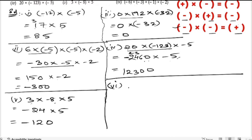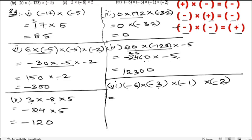Sixth bit: minus 6 into minus 3 into minus 1 into minus 2. Minus into minus is plus, 6 threes are 18. Then minus into minus is plus, 1 twos are 2. Finally, 18 twos are 36. So the answer is 36. These were the solutions to all the problems.